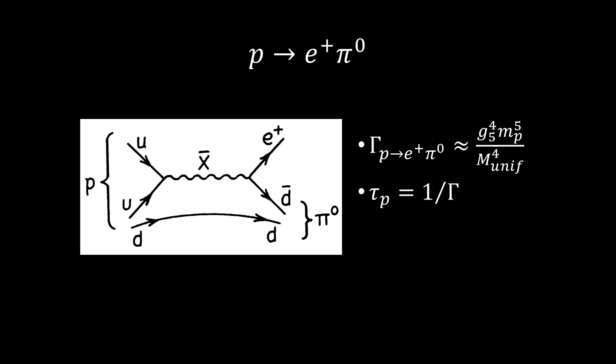Thus, up to a numerical factor, the width Γ must be about g_5^4 m_p^5 / m_unif^4. The numerical factor will be proportional to the probability of two quarks being in the same place so they can annihilate, which is significantly less than unity. So, the lifetime τ = 1/Γ will be even longer than indicated by the width shown.